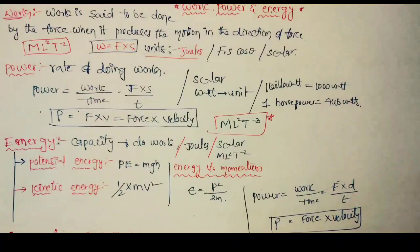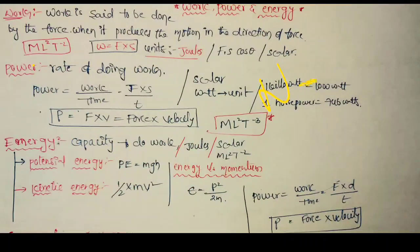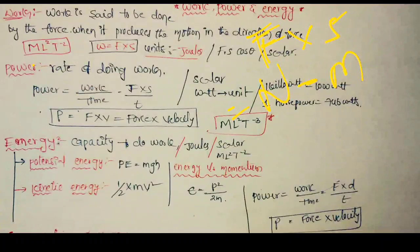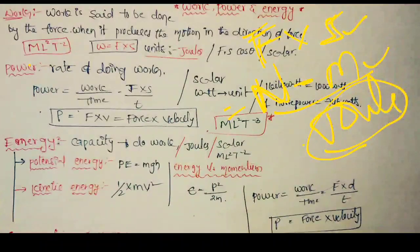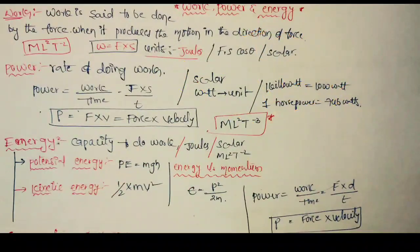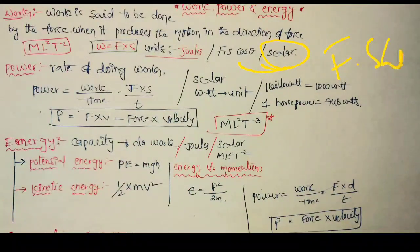Work is said to be done by the force. The work unit is Newton meter. The formula is W = F into S. Work is a scalar quantity, and it involves the dot product, so W = Fs cos θ. Joules is the unit of work.